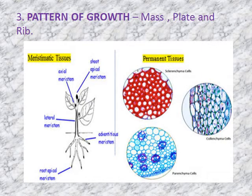Plant tissue is of two types: meristematic tissue and permanent tissue. A small picture has been given. You can see the meristematic regions present on the shoot tip, given as shoot apical meristem. Then axial meristem, that means in between the leaf - the angle between the leaf and the stem. Then lateral meristem, which is on the stem. Then you have the root apical meristem and adventitious meristem.